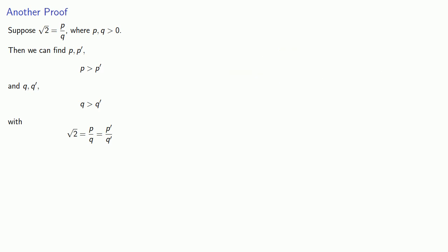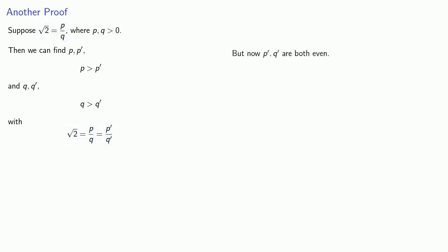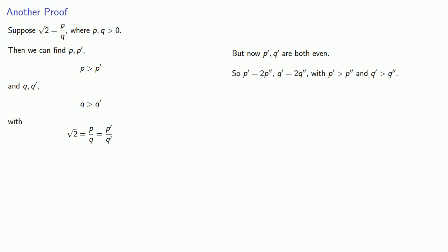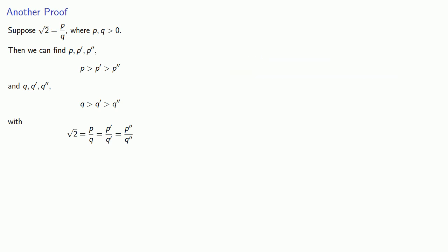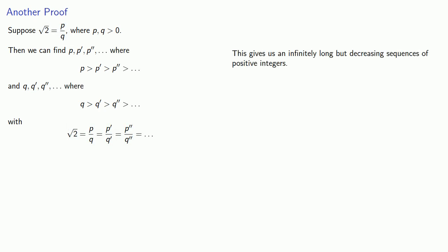But that takes us right back to our starting point: square root of 2 equals p-prime divided by q-prime. So now we know p-prime and q-prime are both even. So p-prime is 2 times something, and q-prime is 2 times something, where our somethings are smaller numbers than before. Removing the common factor again, we find square root of 2 equals p-double-prime divided by q-double-prime — and that takes us right back to our starting point. There's no way out of this loop. This gives us an infinitely long but decreasing sequence of positive integers, which is impossible.